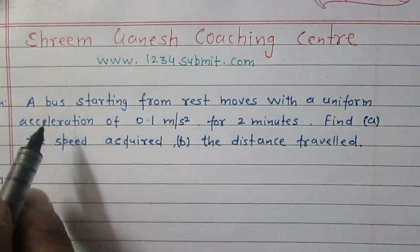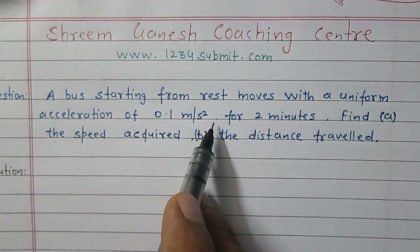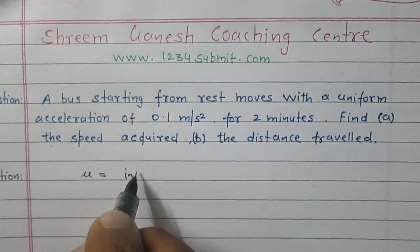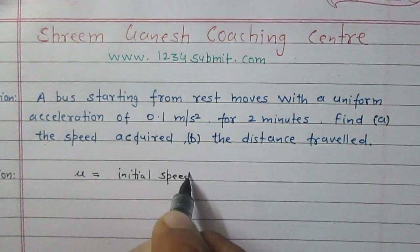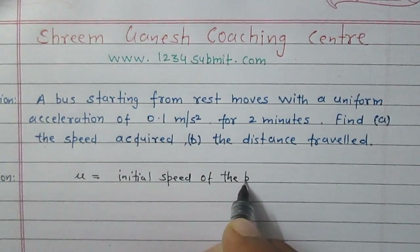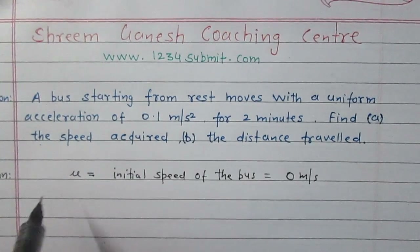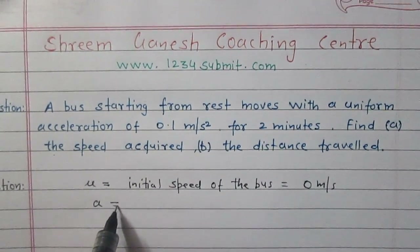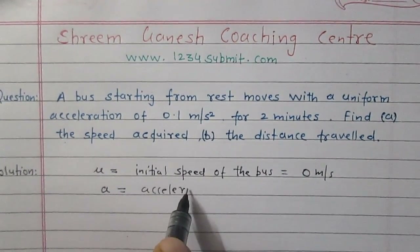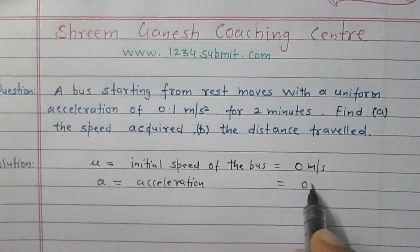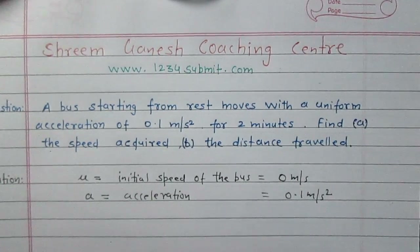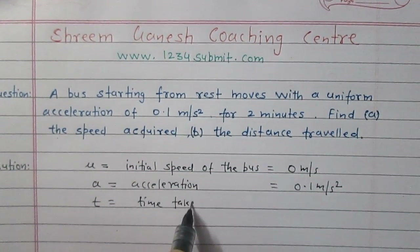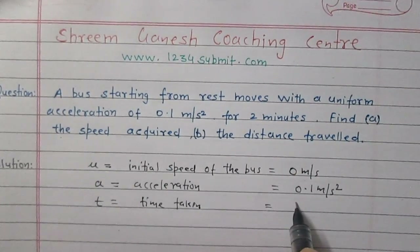In the first line of the question, you will find 'a bus starting from rest.' What does it mean? It means the initial speed, denoted by u, of the bus is 0 meter per second. The acceleration is 0.1 meter per second square, and the time taken by the bus is two minutes.